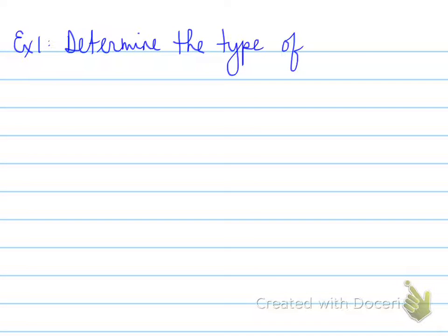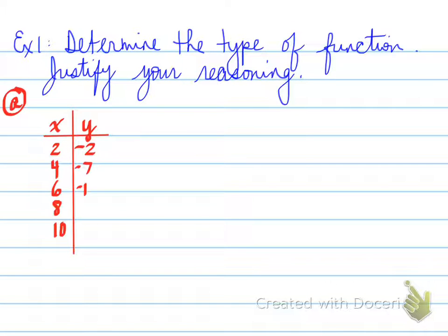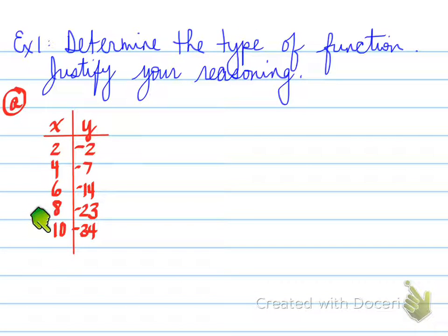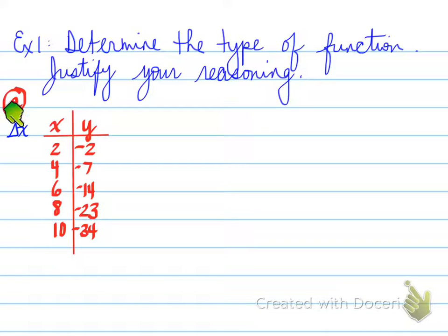Example one: determine the type of function and justify your reasoning. Looking at a table of values, the very first thing you have to do is check if the x's go in a pattern. If the x's do not go in a pattern, you cannot determine the type of function based on the table itself — you would write 'unable to determine.' We check the change in x, also known as delta x. Delta means the change — how are the x's changing?